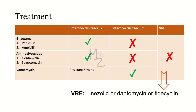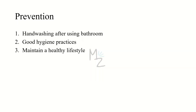Enterococci is treated with three types of drugs. First, beta-lactams like penicillin and ampicillin treat enterococcus faecalis but not faecium. Second, aminoglycosides such as gentamicin or streptomycin treat enterococcus faecalis but not faecium. Third, vancomycin treats enterococcus faecium, but not vancomycin-resistant strains of faecalis. For vancomycin resistant enterococci, linezolid, daptomycin, and tigecycline are used. For prevention, hand washing after using the bathroom is essential, along with practicing good hygiene and maintaining a healthy lifestyle.